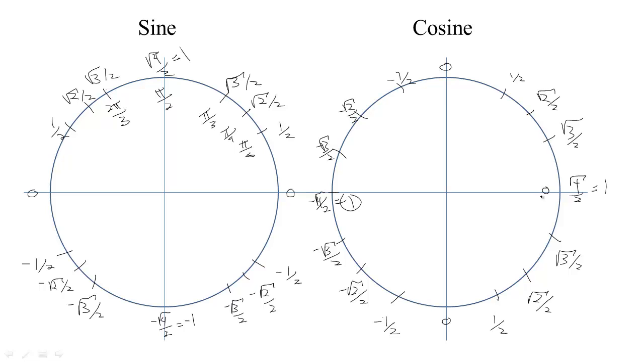For example, angle of 0 or 2π, an angle of π/6, π/4, π/3. Let's see, we've got π/2 here, 2π/3, 3π/4.